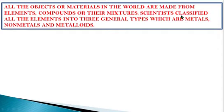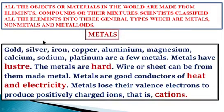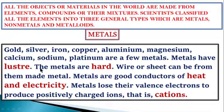Scientists classified all the elements into three general types: metals, nonmetals, and metalloids. Metals include gold, silver, iron, copper, aluminium, magnesium, calcium, sodium, and platinum. Metals have luster, are hard, and wire or sheet can be formed from them. Metals are good conductors of heat and electricity.